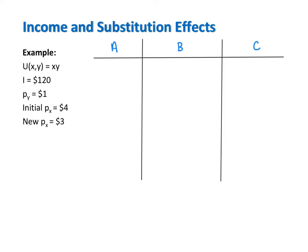Bundle A is the consumer's original utility-maximizing bundle. To calculate bundle A, we first set up the tangency condition, which sets the MRS equal to the MRT. For this utility function, the MRS is Y over X and the original MRT is 4 over 1. Cross-multiplying and solving for Y gives us Y equals 4X.